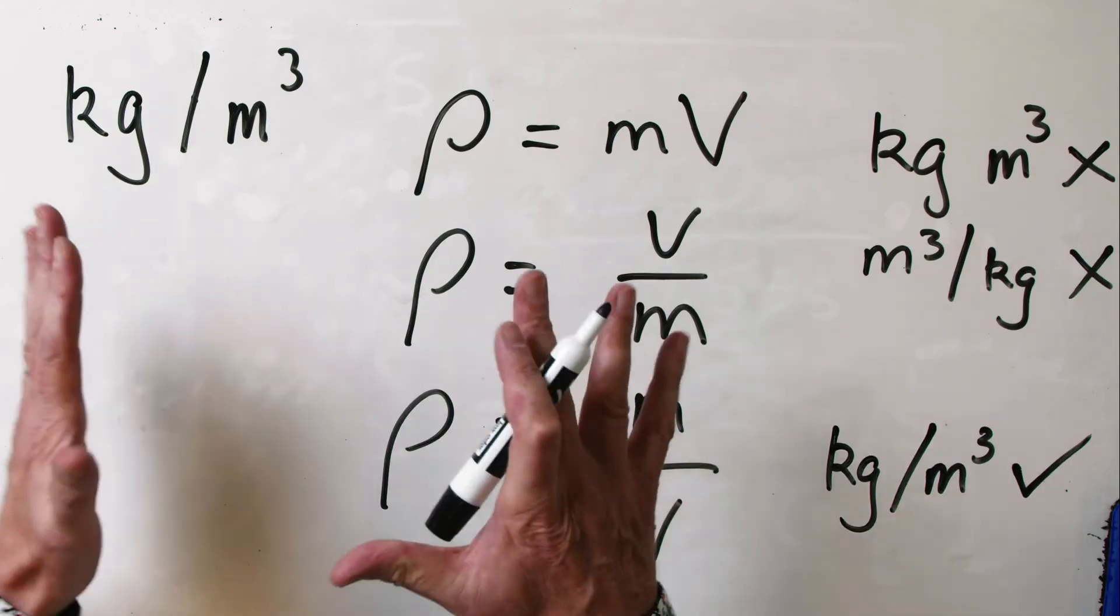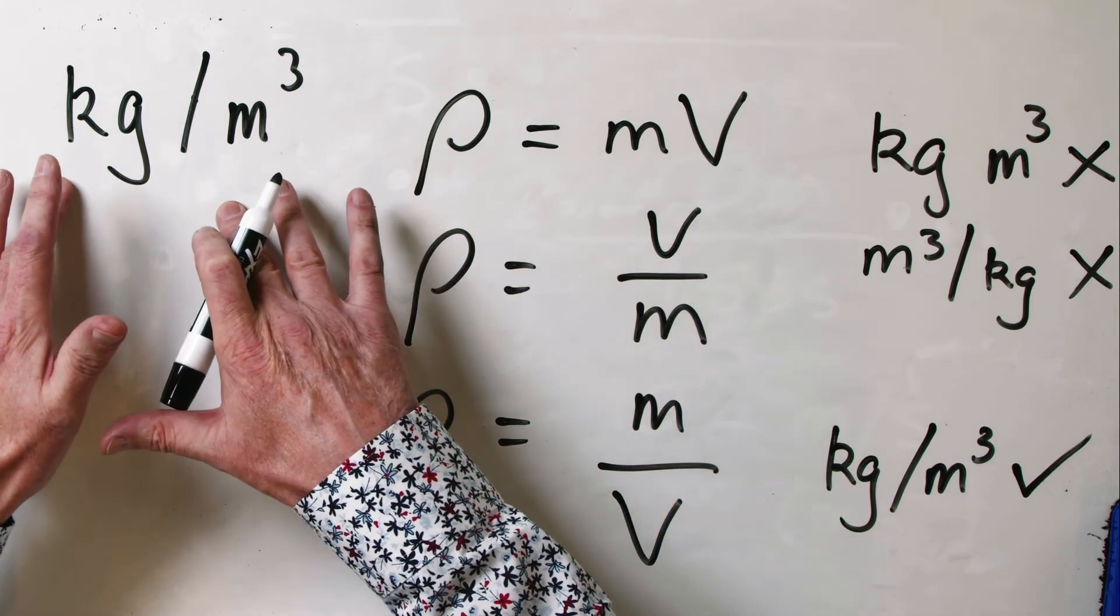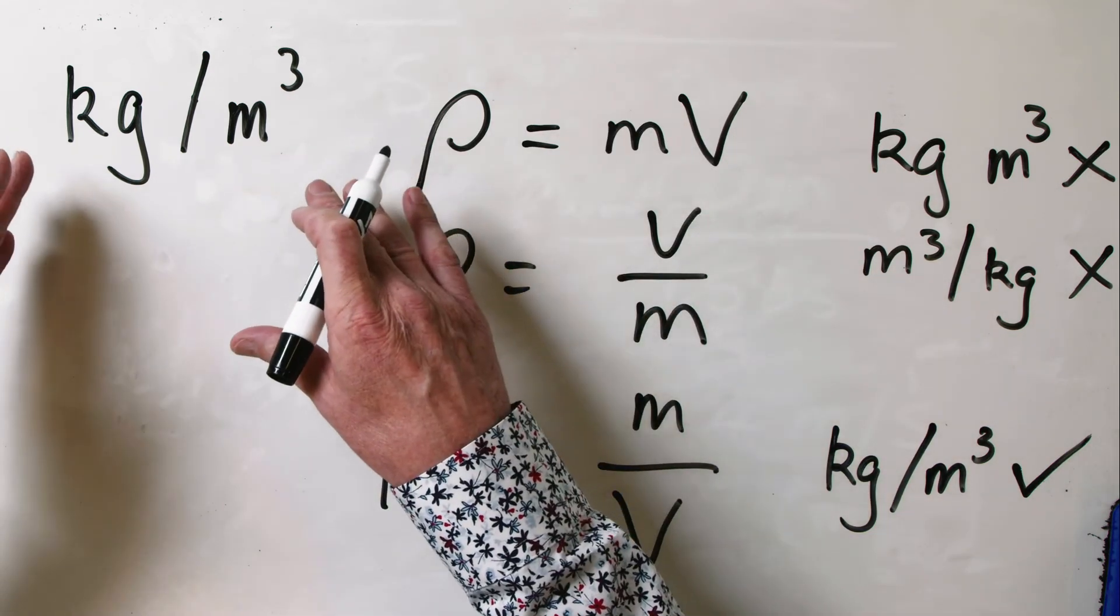See, so even if you can't remember the equation that you need to use, you can always work it out. All that you need to know in order to work out the correct equation is knowing the unit of the thing that you want. In this case, the unit of density was kilogram per cubic metre. The previous case, the unit of speed or velocity was metre per second.